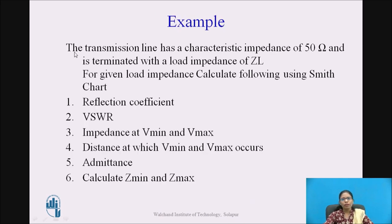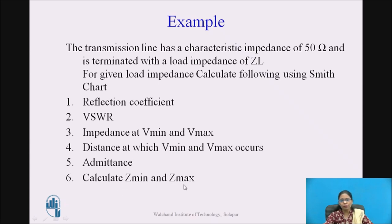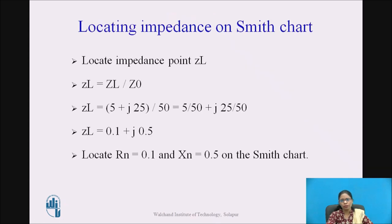Let us consider one example. The transmission line has a characteristic impedance of 50 ohm and it is terminated in the load impedance ZL. For a given load impedance, calculate the following parameters using the Smith chart: the reflection coefficient, VSWR, impedance at Vmin and Vmax, distance at which Vmin and Vmax occur, admittance, and the maximum and minimum impedance values.